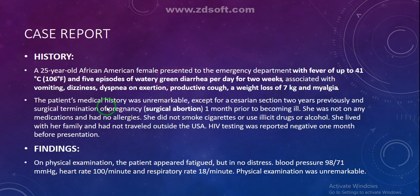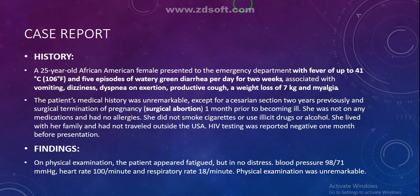The patient's medical history was unremarkable — meaning findings that are either normal or have no significance to the patient. Her history was fine except for a cesarean section two years previously and a surgical termination of pregnancy one month prior to becoming ill. She was not on any medication, had no allergies, did not smoke, did not use illicit drugs or alcohol, had not traveled outside the USA, and HIV testing was negative one month before presentation.